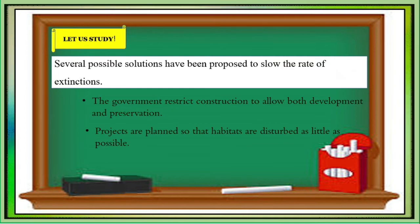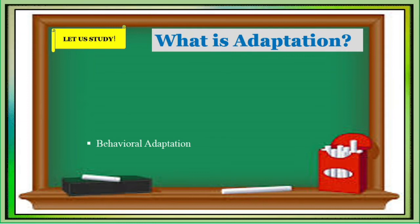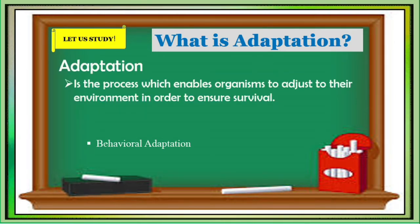Several possible solutions have been proposed to slow the rate of extinction. First, governments restrict construction to allow both development and preservation of natural habitats. Second, projects are planned so that habitats are disturbed as little as possible. Have you ever wondered how animals are able to survive in the wild? Animals have certain adaptations that help them survive and thrive. Adaptation is the process which enables organisms to adjust to their environment in order to ensure survival. There are two types of adaptation: physical or structural adaptation, and behavioral adaptation.